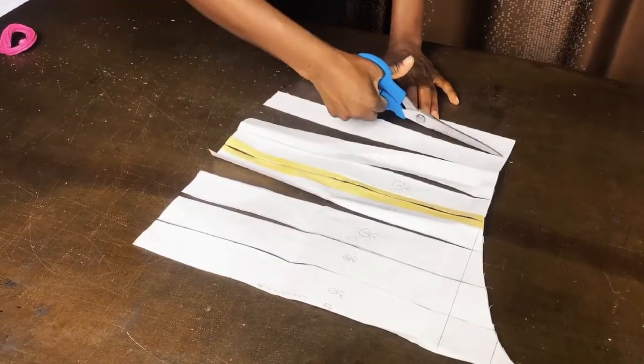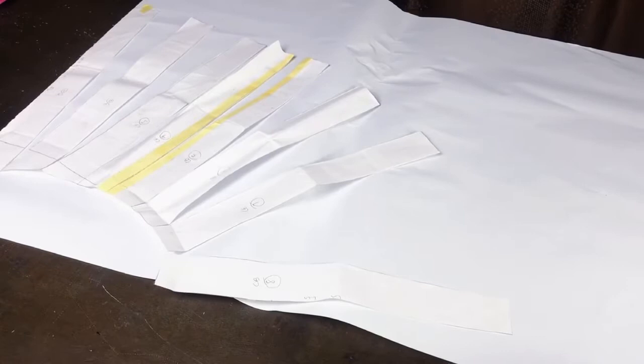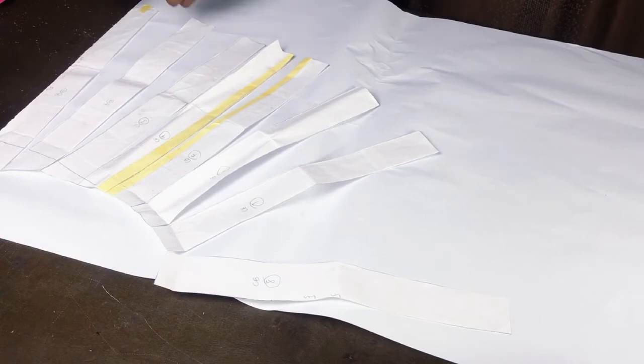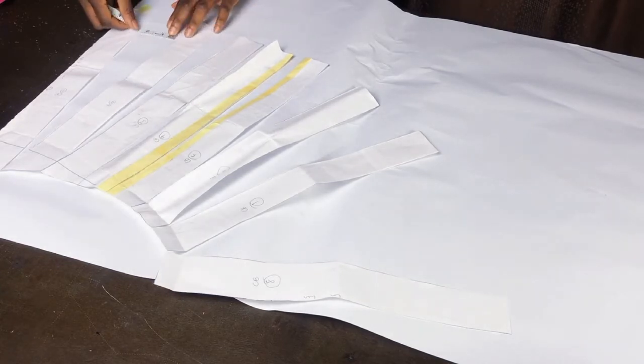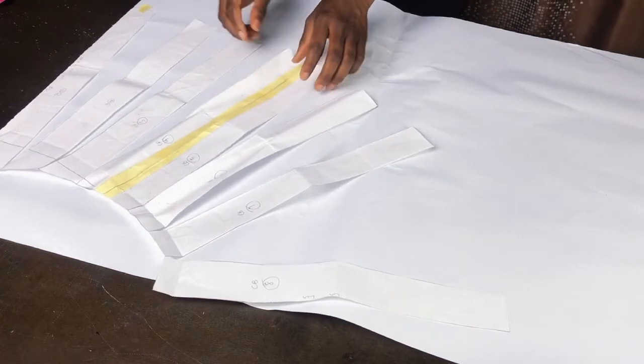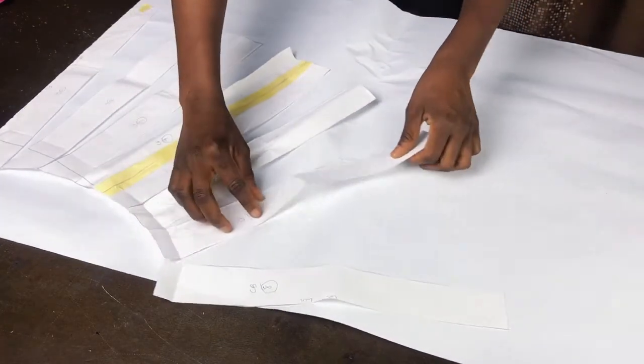It should look like this after you've slashed it. The flare in the style that we're trying to recreate is not so full so I'll just spread by two inches apart but if you want yours to be fuller you can spread a lot more maybe by like four to eight inches but for this style two to four inches is just fine.